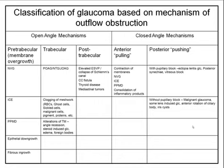Under the closed-angle mechanisms, we typically think of this as an anterior pulling or posterior pushing mechanism, and the diagnoses are given in the table. I would strongly encourage you to become familiar with this table and be able to list things off of it quite quickly.